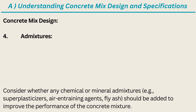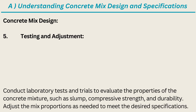Step 4: Admixtures. Consider whether any chemical or mineral admixtures — e.g. superplasticizers, air-entraining agents, fly ash — should be added to improve the performance of the concrete mixture. Step 5: Testing and Adjustment. Conduct laboratory tests and trials to evaluate the properties of the concrete mixture, such as slump, compressive strength, and durability. Adjust the mix proportions as needed to meet the desired specifications.